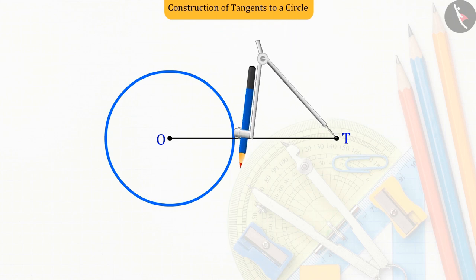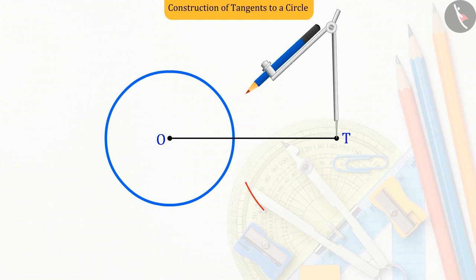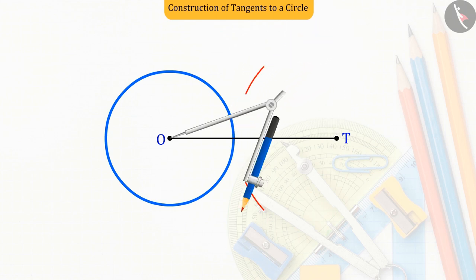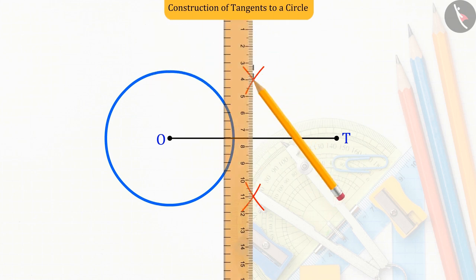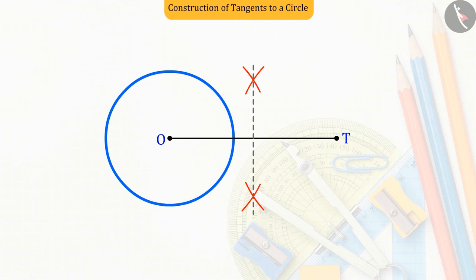So now, let us bisect the drawn line segment, that is OT. From which we get the midpoint M of the line segment OT, which divides the line segment OT into two equal parts, OM and MT.